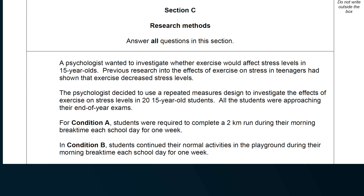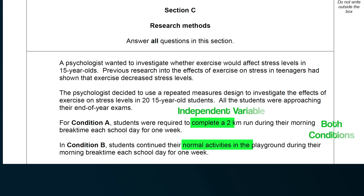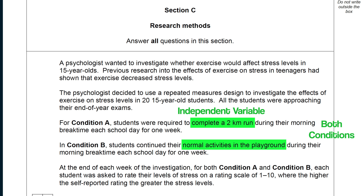'For condition A, students were required to complete a two kilometre run during their morning break each school day for one week. In condition B, students continued their normal activities in the playground during their morning break each school day for one week.' Here we see both conditions of the independent variable. At the end of each week, each student rated their stress on a scale of 1 to 10, where higher scores indicate greater stress. This is ordinal data — the level of measurement you need when asked about statistical tests.